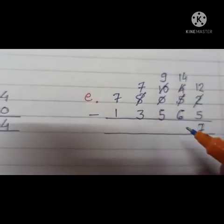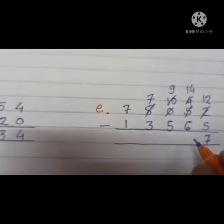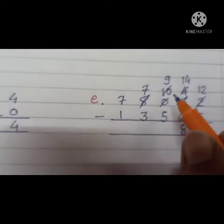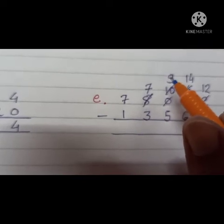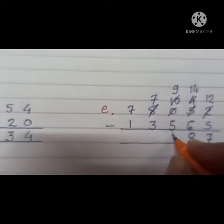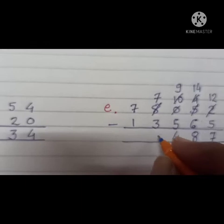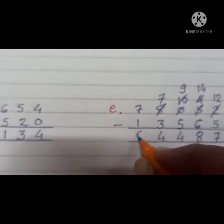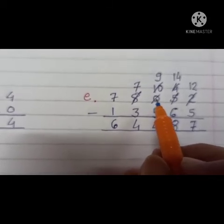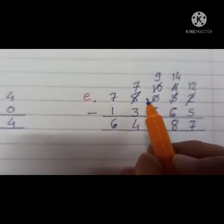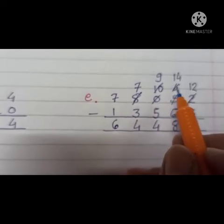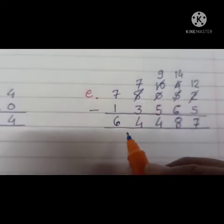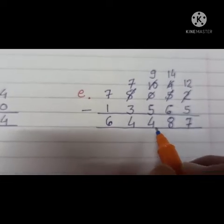Now 14 minus 6 is equal to 8. 9 minus 5 is equal to 4. 7 minus 3 is equal to 4. And 7 minus 1 is equal to 6. Understand? If there is 0 in between and you need to borrow, then first borrow from the next number, then give to the other one. Answer is 64,487.